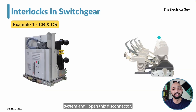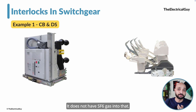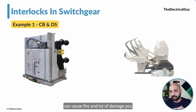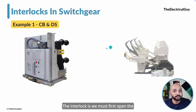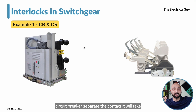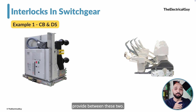If the current is flowing and you open the disconnector, the moment the contacts start separating, an arc will strike — 100 percent. The disconnector has no capability to quench that arc; it has no vacuum interrupters or SF6 gas. That arc can reach an extreme level and cause fire and significant damage. So the interlock is: you must first open the circuit breaker — which will interrupt the current successfully by handling the arc — and only after that open the disconnector. With no current flowing, there is no problem.